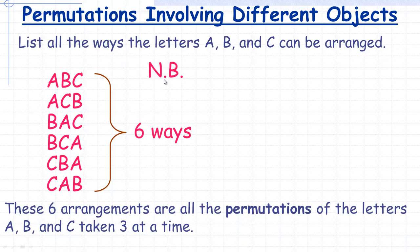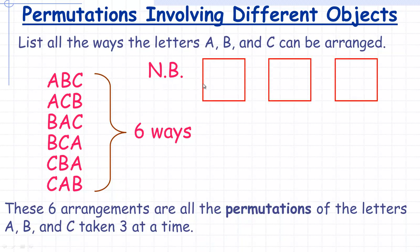Now, take note — NB is Latin for 'nota bene', meaning take note — that we could instead think of this differently to get the six. We're arranging three things in three boxes. For the first box, there are three ways to select a letter: A, B, or C. With no repetition, once you've picked a letter, there are two ways to fill the second spot. And once two letters are placed, there's only one way to fill the last one. So we multiply: three times two times one equals six.